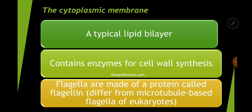Now let's discuss the cytoplasmic membrane. A typical cytoplasmic membrane is a lipid bilayer. Most cytoplasmic membranes are lipid bilayers. Lipids are usually hydrophobic, so they protect the inner environment of the cell.